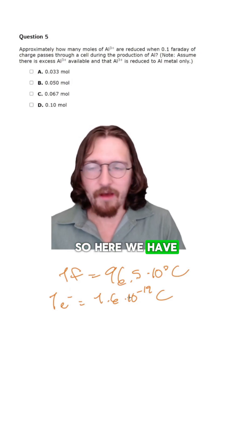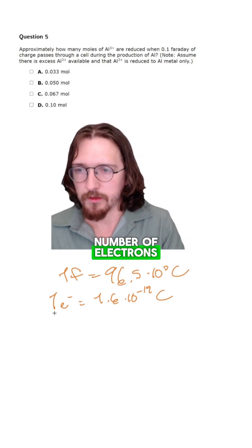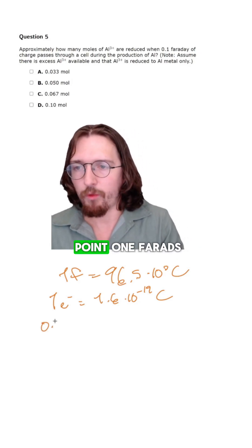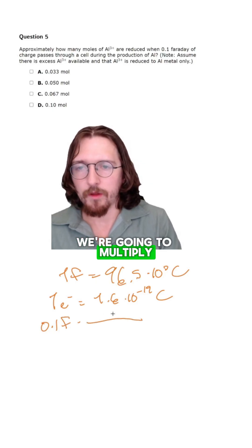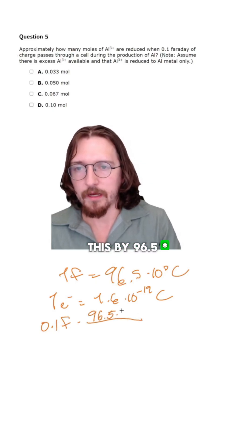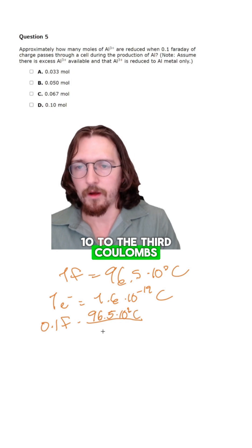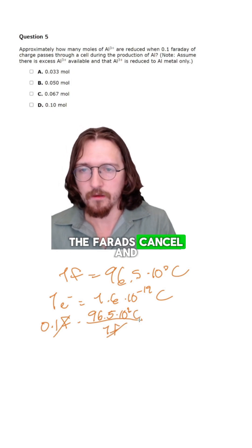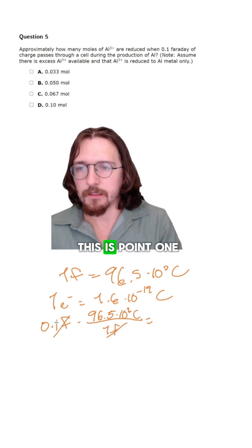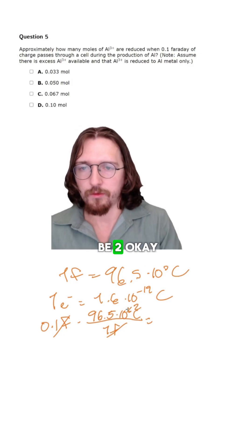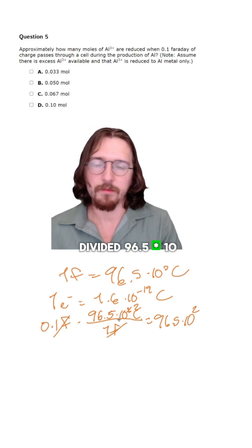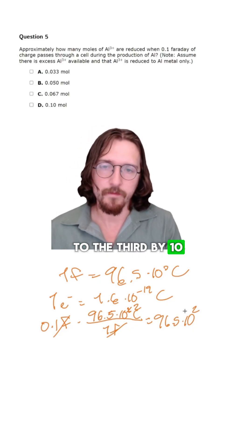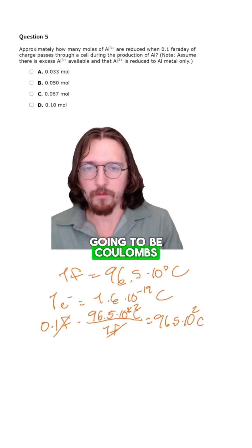Our first step is actually going to be to convert the farads into coulombs. So here we have 0.1 farads, and we're going to multiply this by 96.5 times 10 to the 3rd coulombs per 1 farad. The farads cancel, and 0.1 is 1 tenth, so this will just give us 96.5 times 10 to the 2nd coulombs, because we divided 96.5 times 10 to the 3rd by 10.